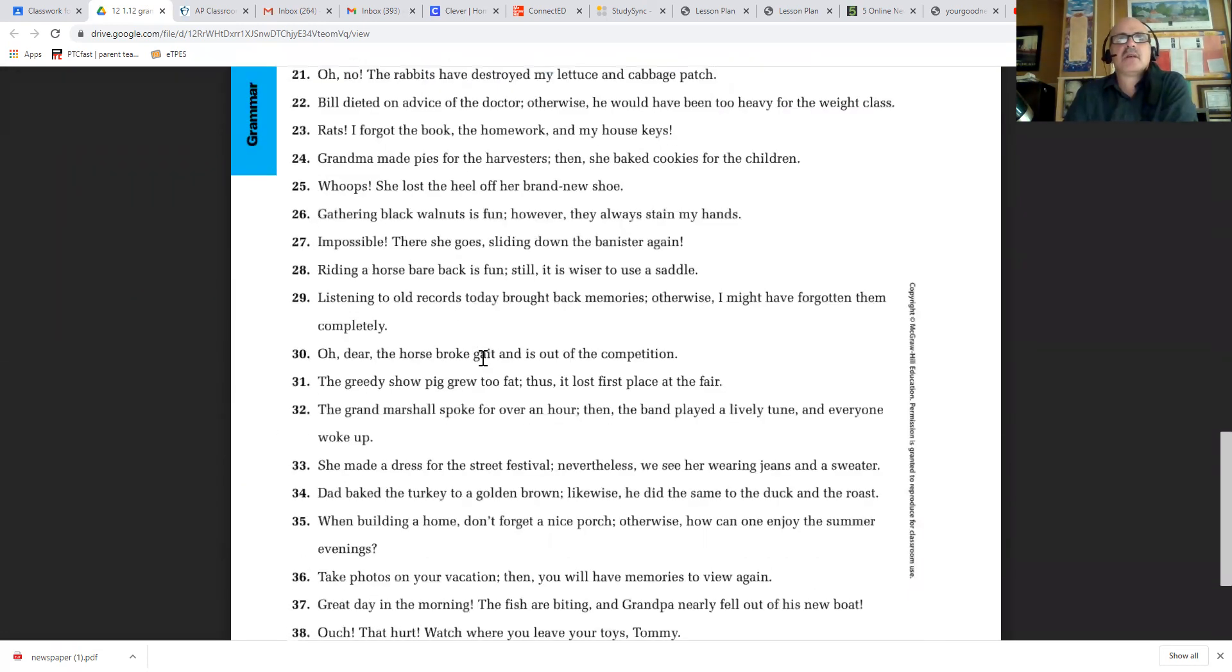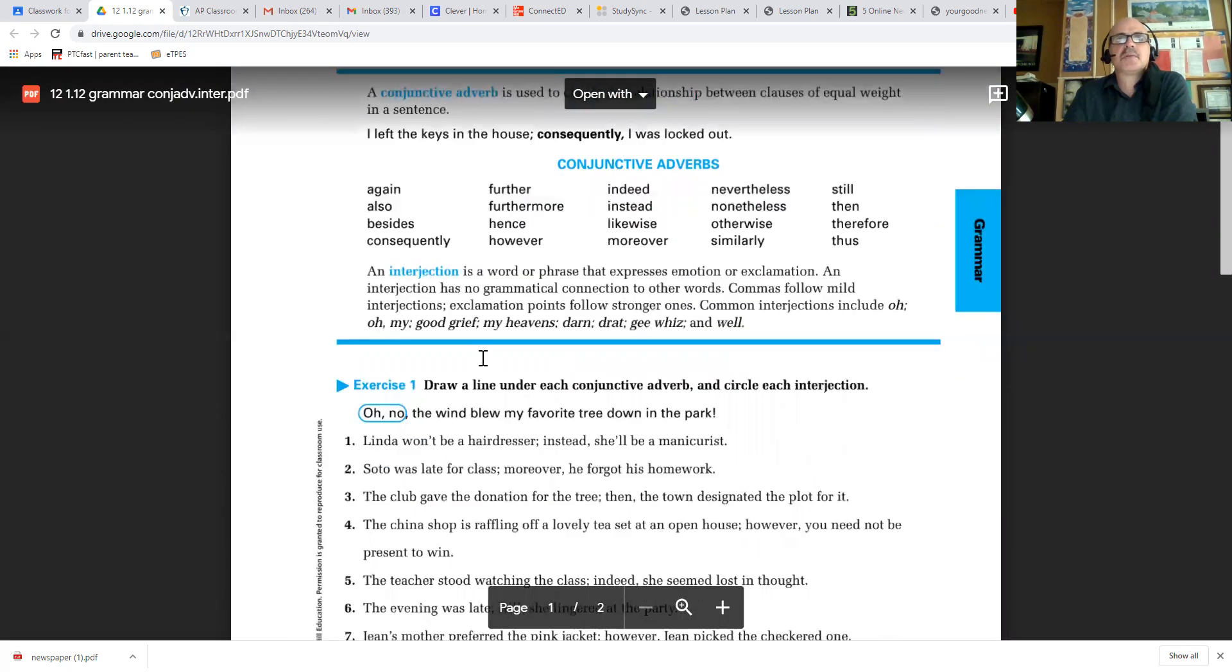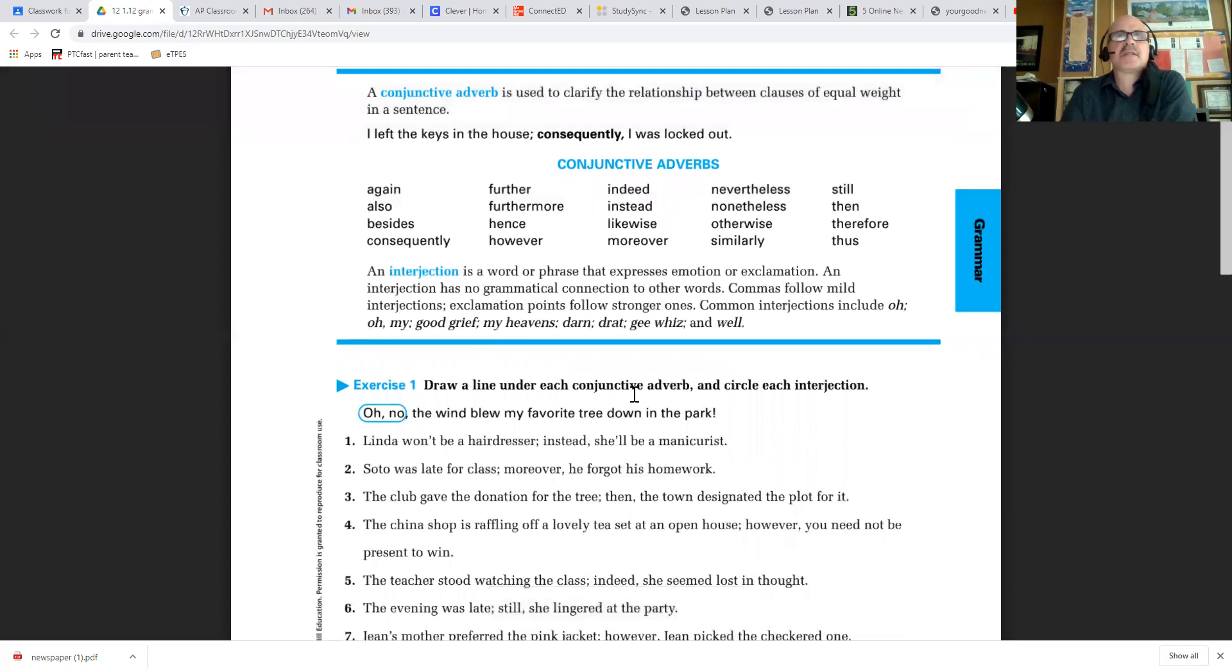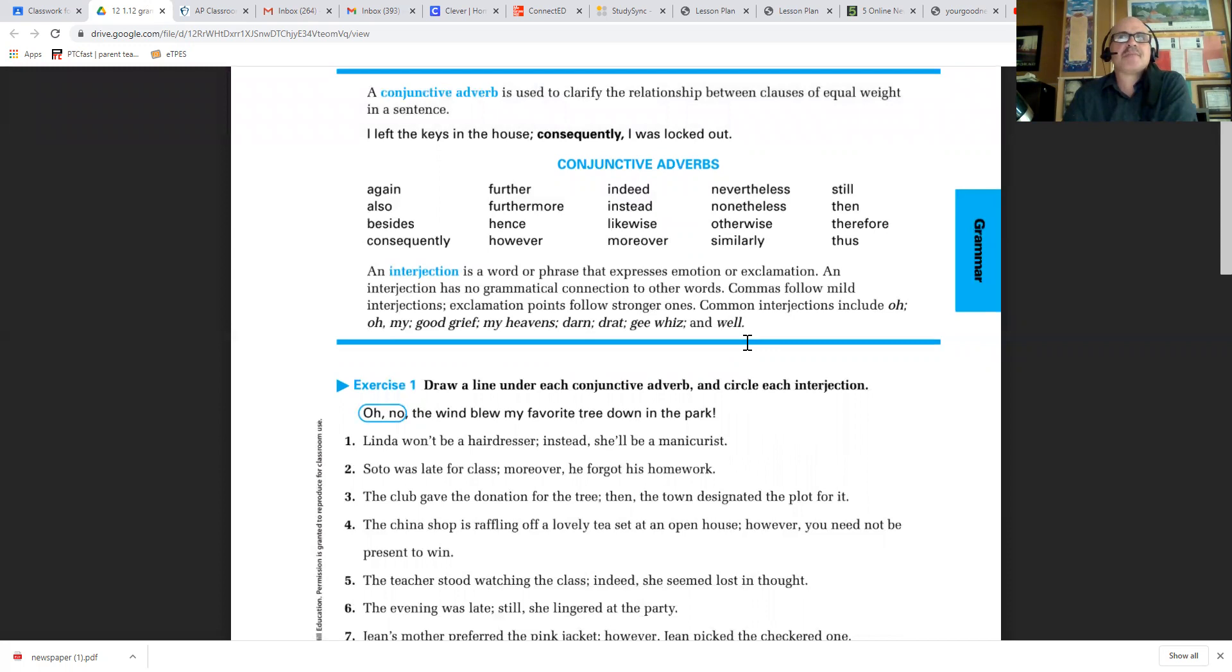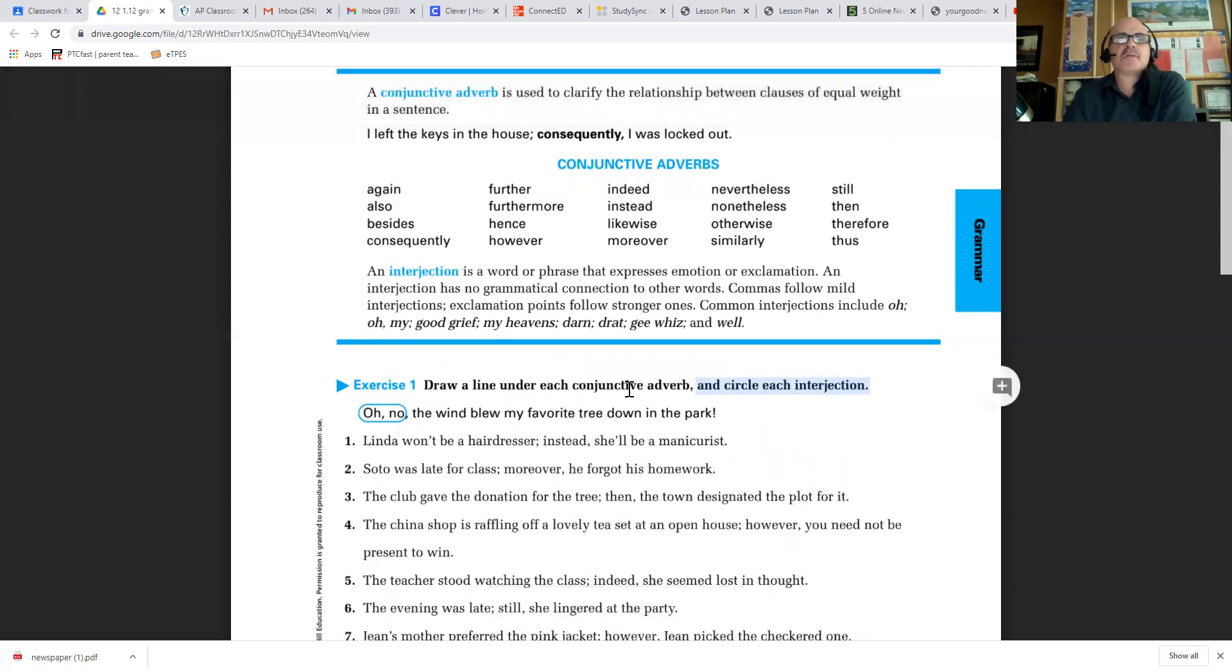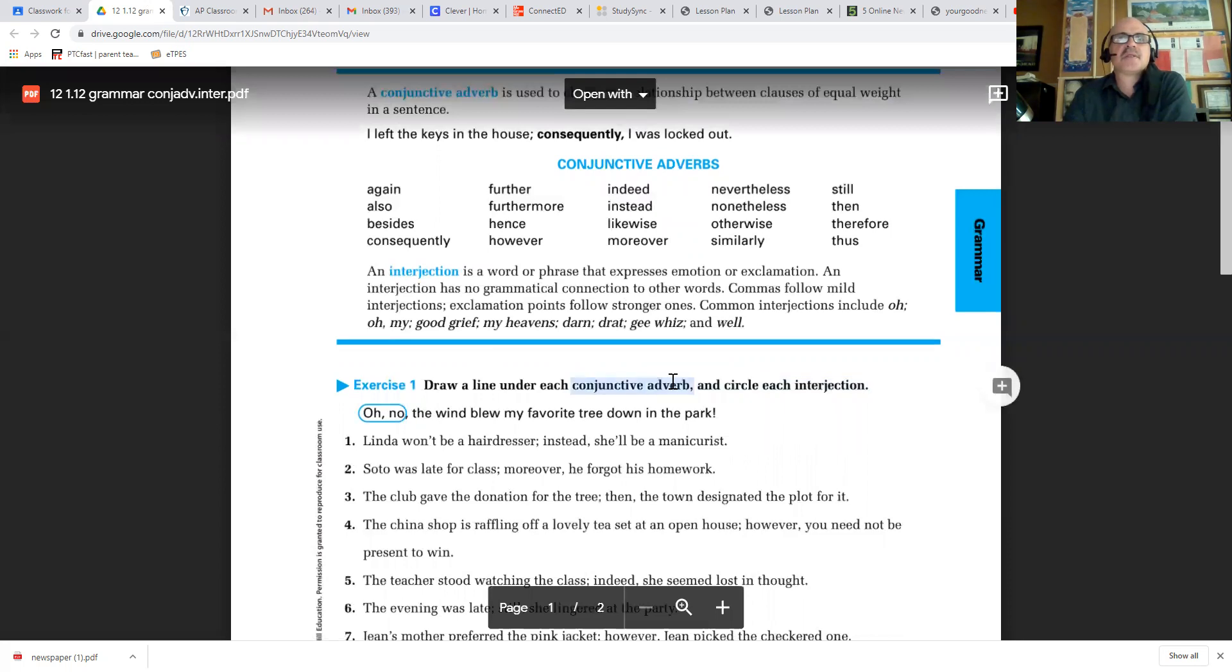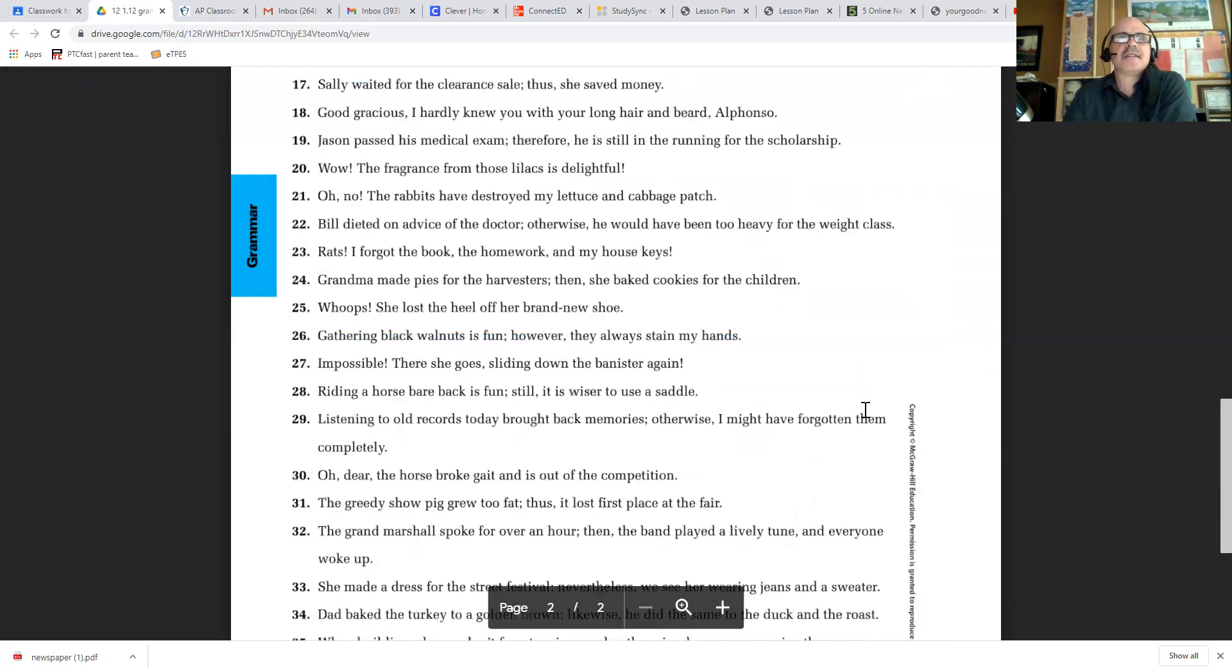All right, so exercise one. Let's see how many items we have here. Oh, looks like all we're doing is looking at conjunctive—oh okay, no, it's mixed. So we want to draw a line under each conjunctive adverb and circle each interjection. That's pretty easy—those are just the expressions of emotion, right? And these are the transitions that you see after the semicolons. That's so easy, you guys. All right, you got an easy lesson this week.